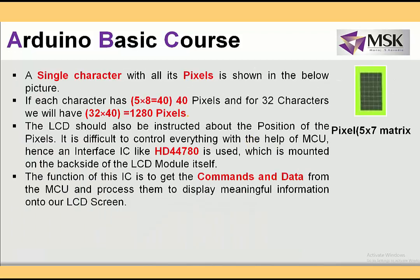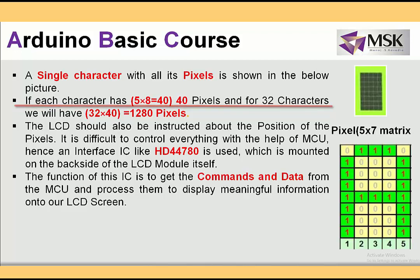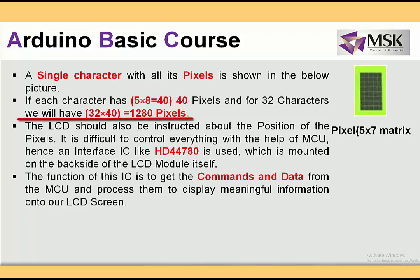Each single character pixel may be either 5 by 7 or 5 by 8, so there are a total of 40 dots per character. If I take 32 characters, then 32 multiplied by 40 gives 1280 — that is 1280 total pixels on the display.